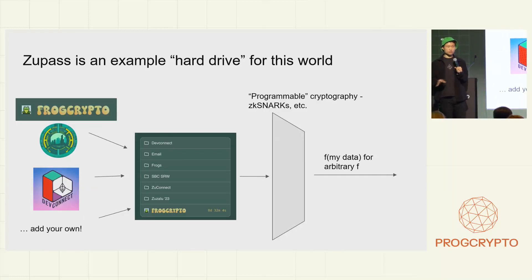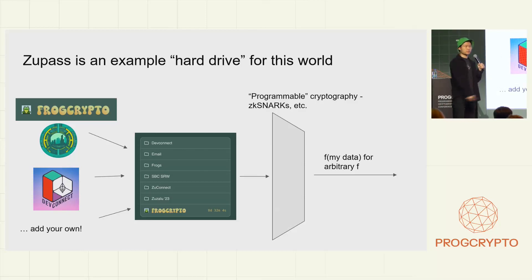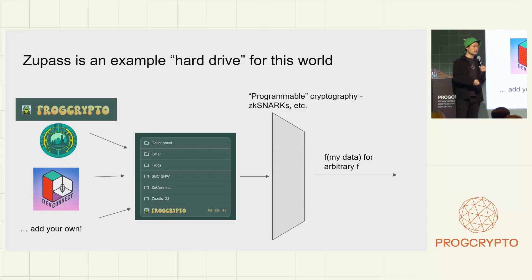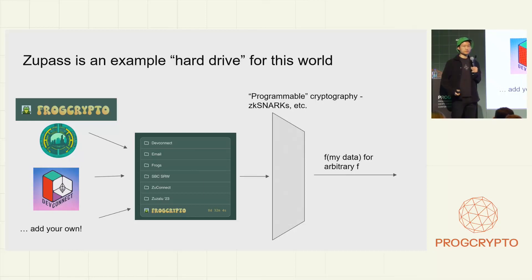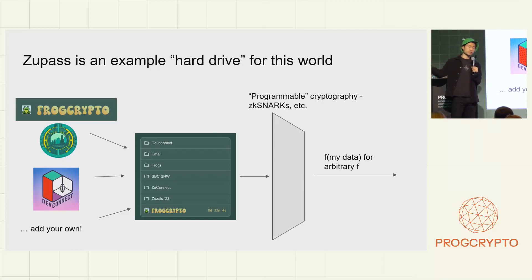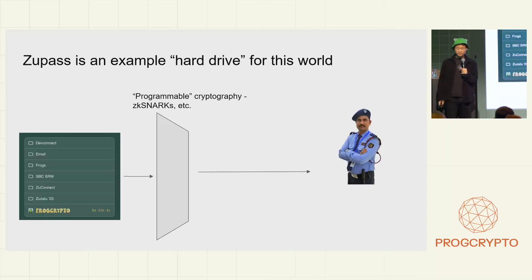ZooPass today is really a toy or proof-of-concept hard drive for this world. It's meant to demonstrate some of the steps of this pipeline, which will inevitably be split up among multiple service providers, infrastructure pieces, and open source software suites. The MVP version has roughly three data sources people hook into their ZooPasses: FrogCrypto, which issues signed pictures of frogs; ZooConnect for a recent event right before DevConnect that issued tickets and credentials; and various DevConnect Week events that issued their tickets. Each issuer is essentially a web server that responds to user requests — the user might share a proof that they have a certain registered email address, and in return be issued a ticket that others can consume.